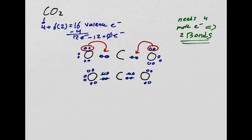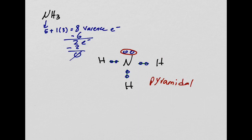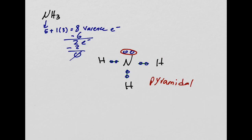What is the geometry of CO2? When looking at geometries, you can ignore double bonds and triple bonds — they don't change the geometry. I have one atom in the middle and two things around it, so the geometry is linear. Double and triple bonds affect bond lengths, which we'll talk about later.